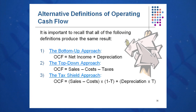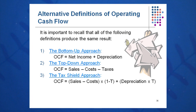The top-down approach is sales minus cost minus taxes — going top down on the income statement. And then finally, the tax shield approach: sales minus cost, times one minus the tax rate, plus depreciation times the tax rate. The depreciation tax shield in this case is D times T.